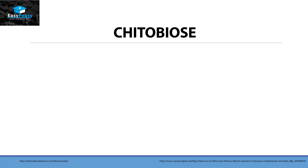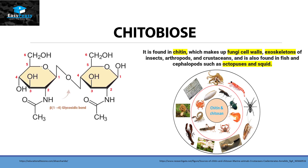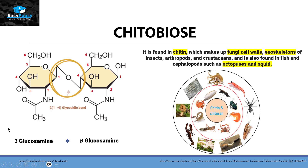The next disaccharide is chitobiose. Chitobiose is found in chitin, which makes up fungal cell walls, the exoskeleton of insects, arthropods, and crustaceans, and is also found in fish and cephalopods such as octopus and squids. Its structure is made up of two derivatives of monosaccharide — specifically glucosamine instead of glucose. The difference between glucose and glucosamine is that instead of an OH on carbon number two, glucosamine has an amine group attached to carbon number two. The bond they form is a beta-1,4 glycosidic bond.